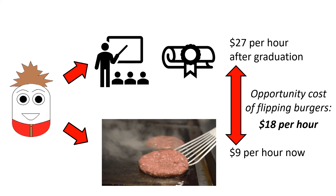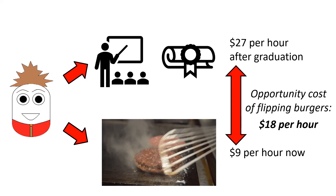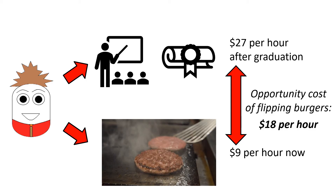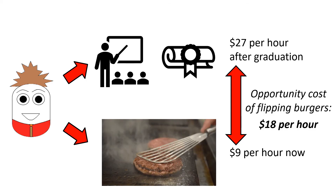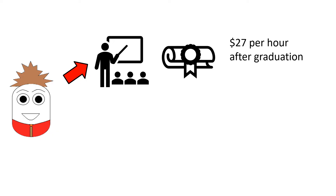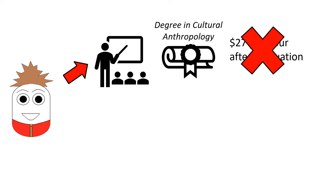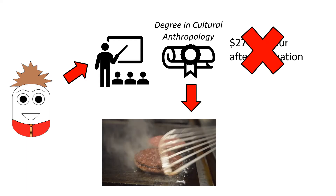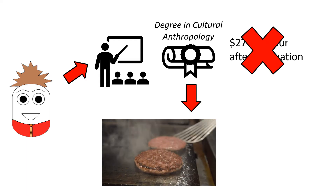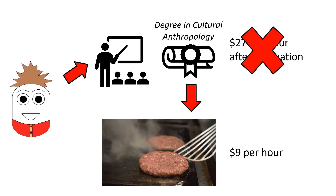A good follow-up question to ask is: what is the earnings potential from the field of study that you choose? In case Tim chooses cultural anthropology, for example, he might not be very employable. It could be that he ends up back at the fast food restaurant making $9 per hour.